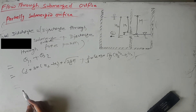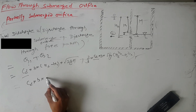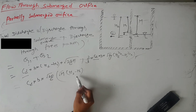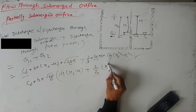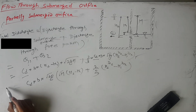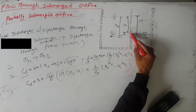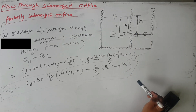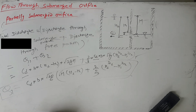Arranging the expression, we take C_D, B, and √(2g) as common factors. The total discharge through the partially submerged orifice becomes: Q_total = C_D × B × √(2g) × [(h2 − h1)×√h + (2/3)×(h2^(3/2) − h1^(3/2))]. This combines the submerged portion discharge (fully submerged orifice formula) plus the free portion discharge (rectangular orifice formula).